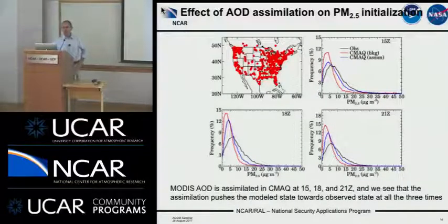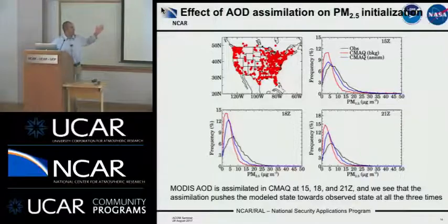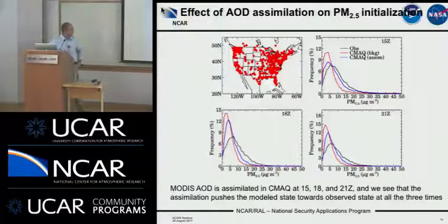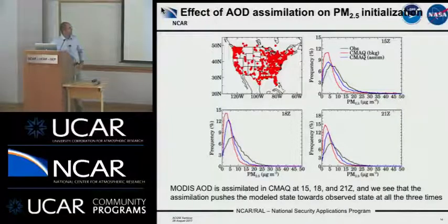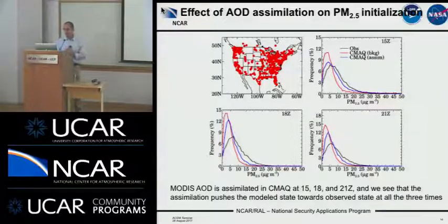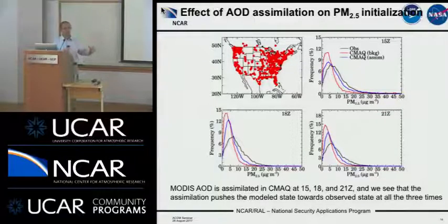For an overall view of performance, here you see all available AirNow network stations managed by EPA providing PM2.5 measurements. We are doing assimilation at 15Z, 18Z, and 21Z. In black is the observation, in red CMAQ before assimilation, and in blue CMAQ after assimilation. Performance differs depending on assimilation time, reflecting how MODIS data is distributed over the US at different times. But definitely what we are doing is a step in the right direction — we are pushing the model towards what is the observed status.